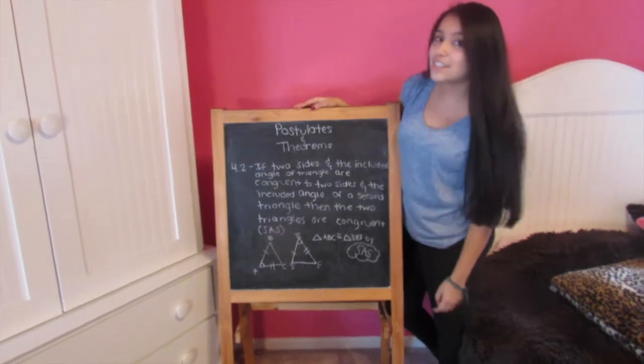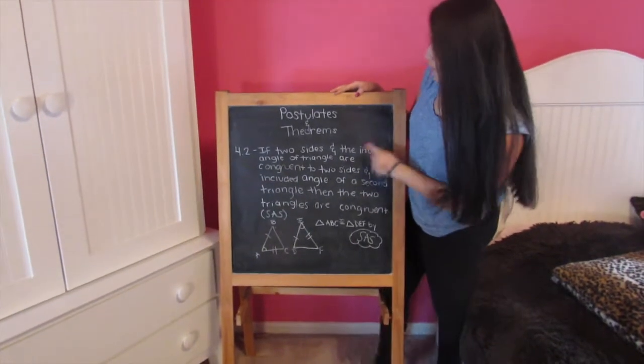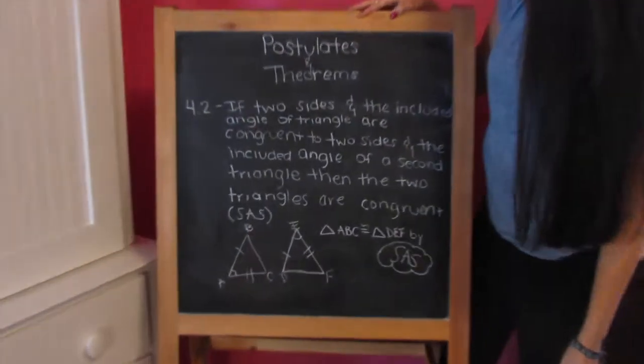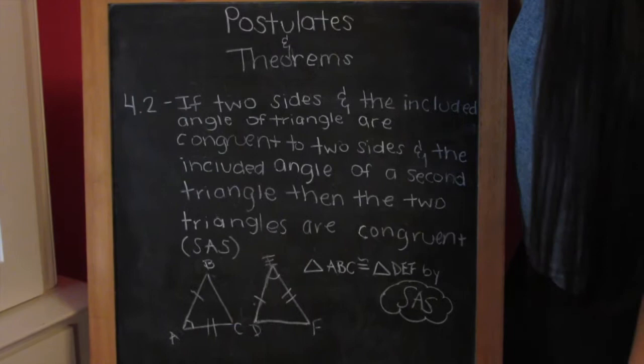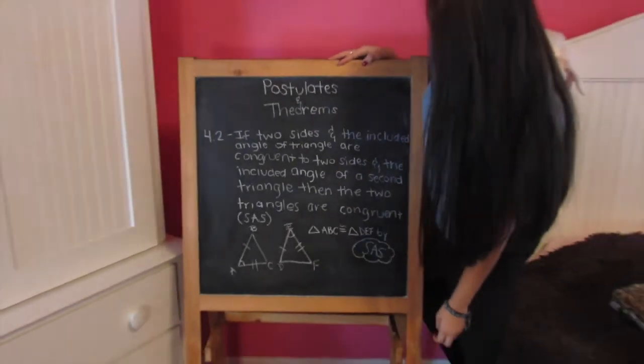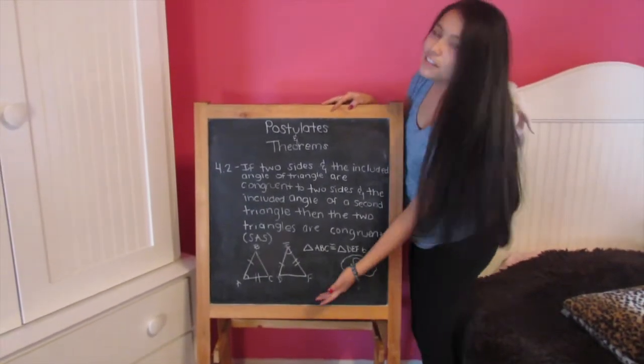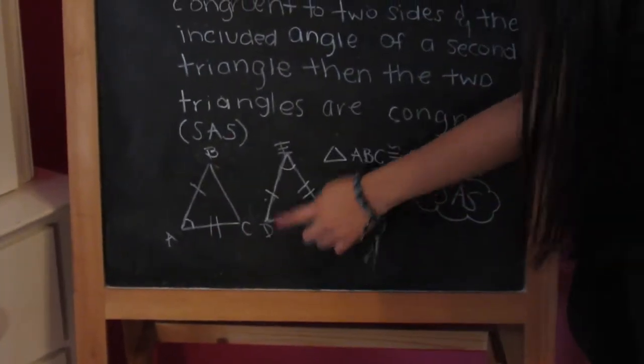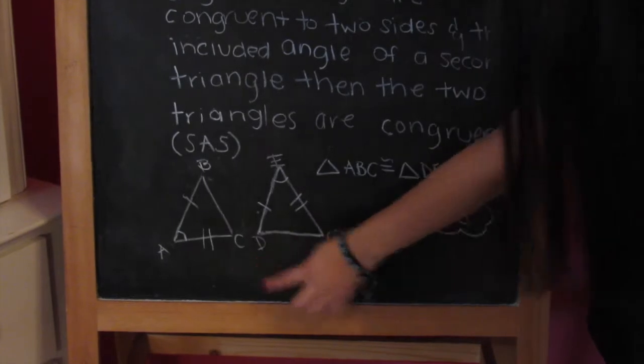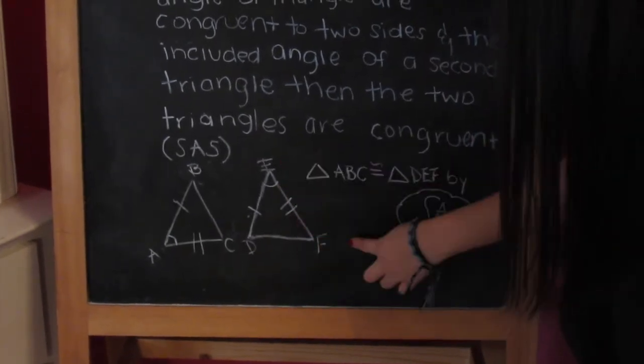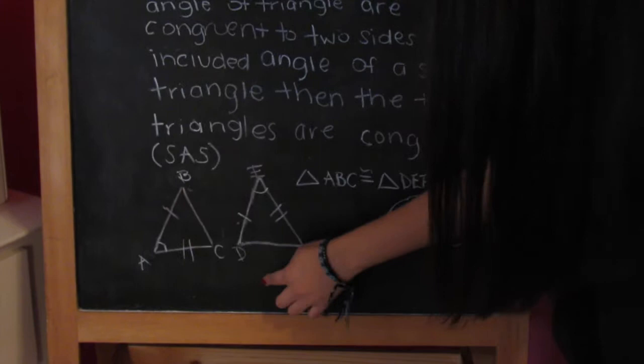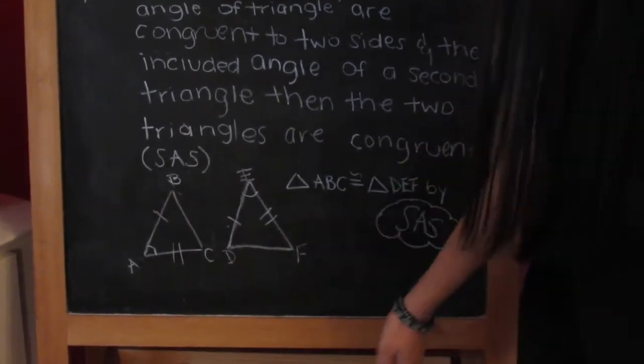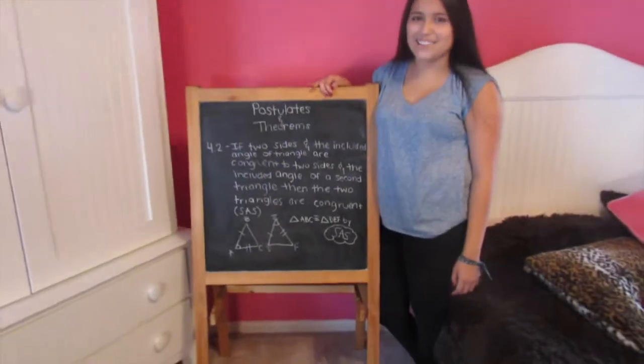Alright, now moving on to the second part, 4.2, which states, if two sides and the included angle of a triangle are congruent to two sides and the included angle of a second triangle, then the two triangles are congruent by SAS. Here's an example of that. Because side AB is congruent to side DE, and side AC is congruent to side EF, and angle BAC is congruent to angle DEF, the two triangles are congruent by SAS.